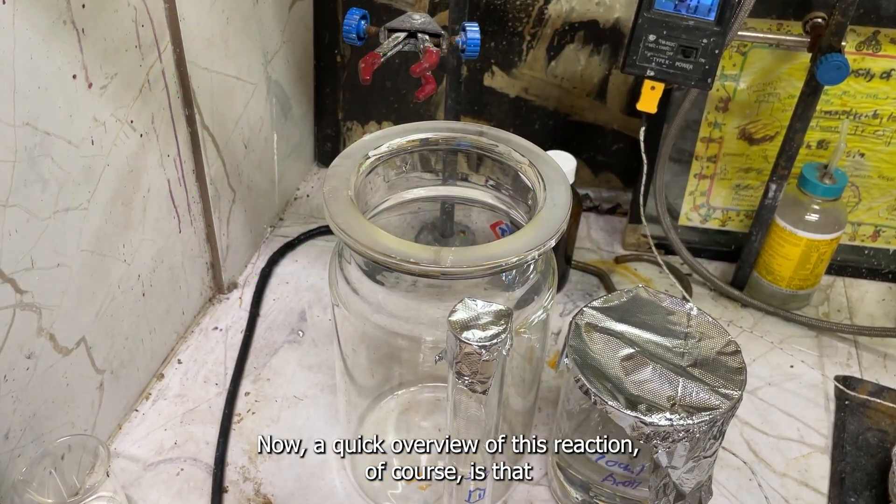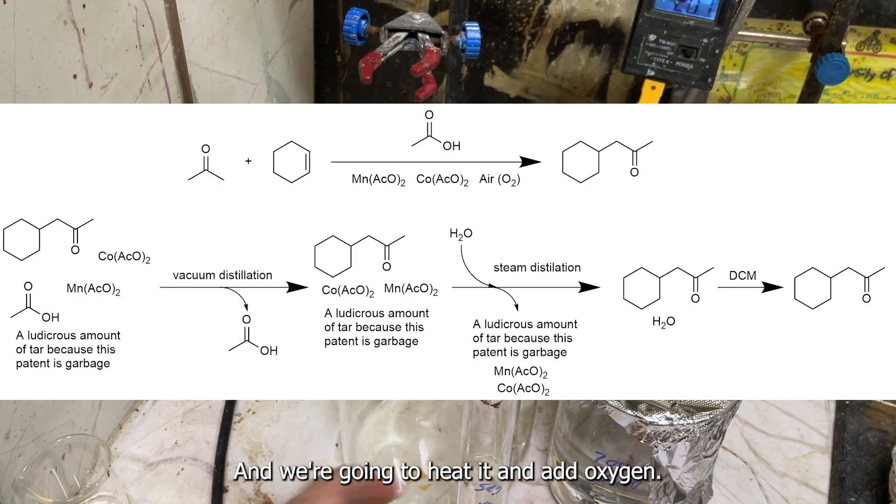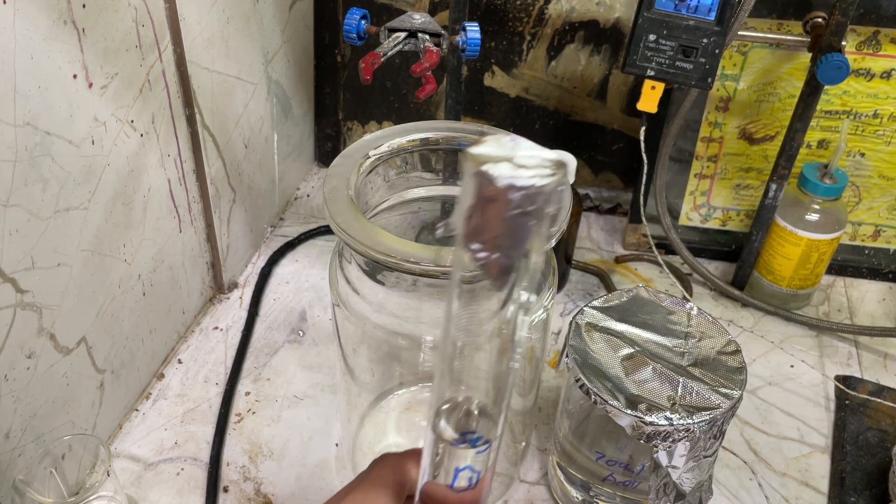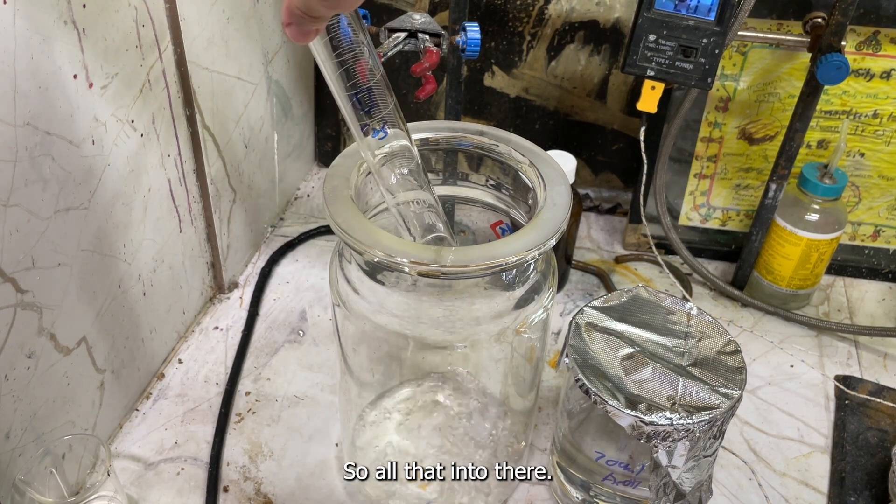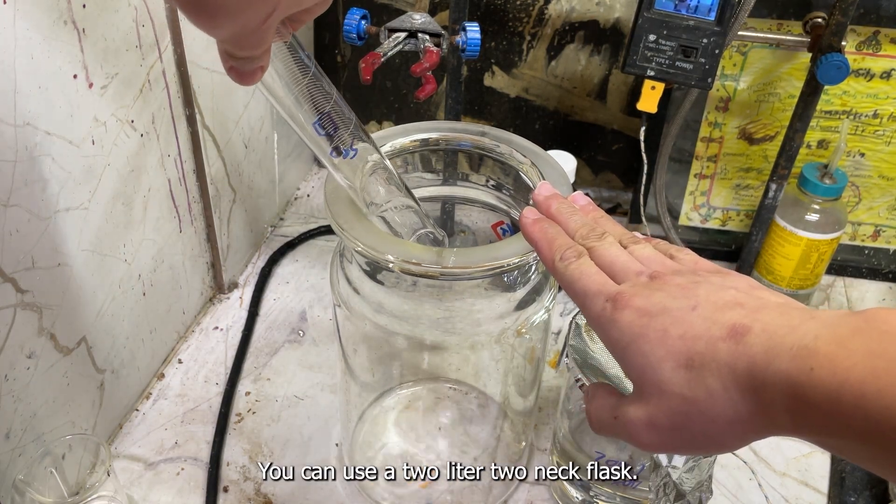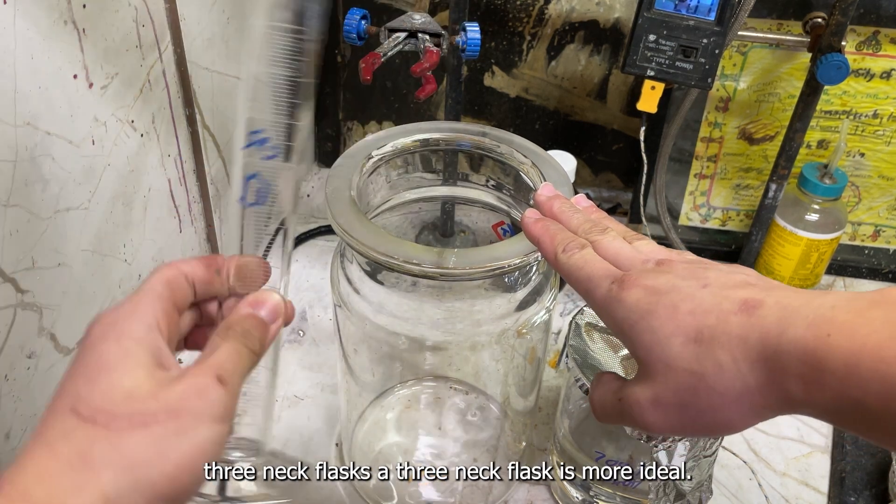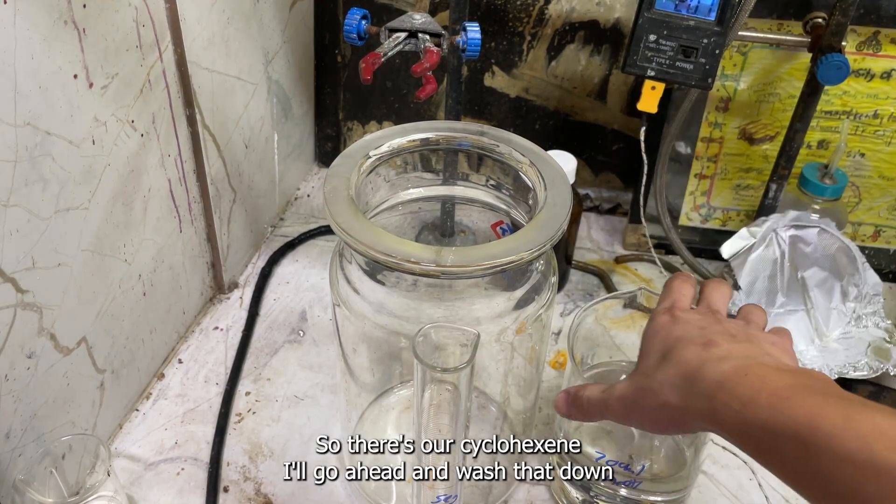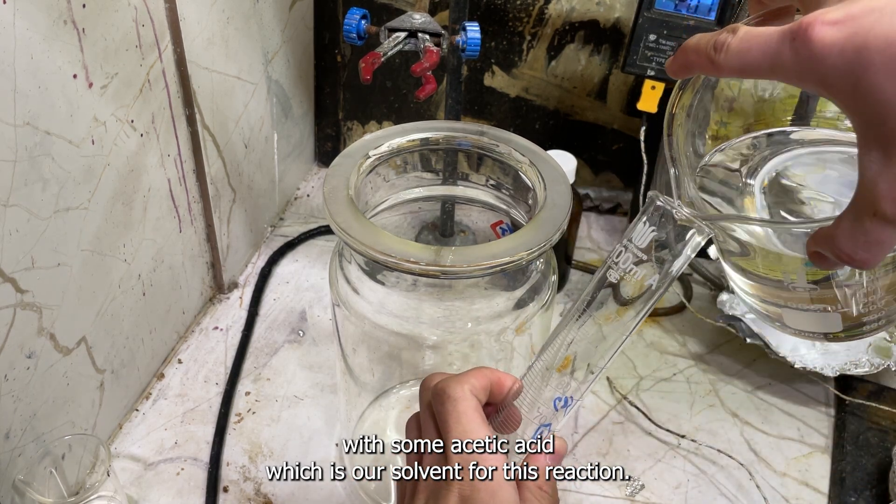A quick overview of this reaction: we're just going to be reacting all of these together, and we're going to heat it and add oxygen, and then we're going to separate it later. Let's start off with our cyclohexanone because it's smelly, so all that into there. You don't need a 3-liter reactor for this, you can use a 2-liter 2-neck flask, but I don't have one of those. A 3-neck flask is more ideal. I'll go ahead and wash that down with some acetic acid, which is our solvent for this reaction.